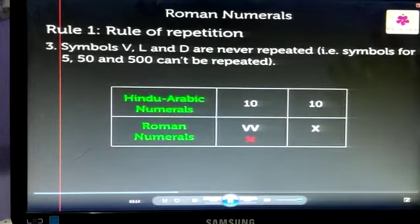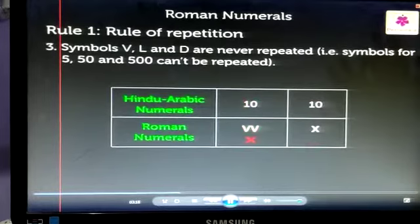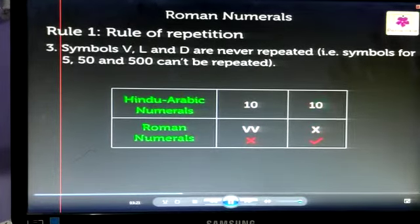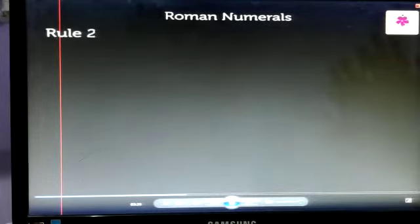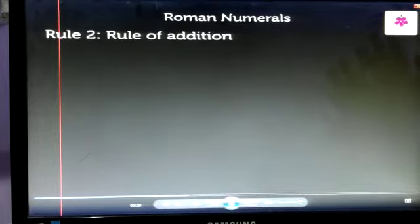This means that we do not write the number 10 by repeating 5, but as X. Now, let us look at the second rule. Rule 2: Rule of Addition.